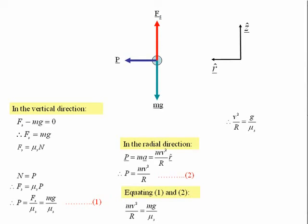Cancelling the m's gives us this equation. Rearranging the equation, we get that v is equal to the square root of g r over mu.